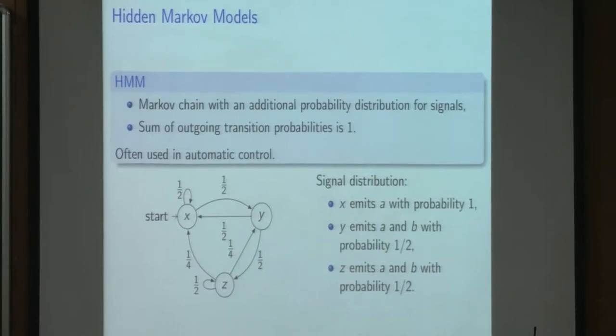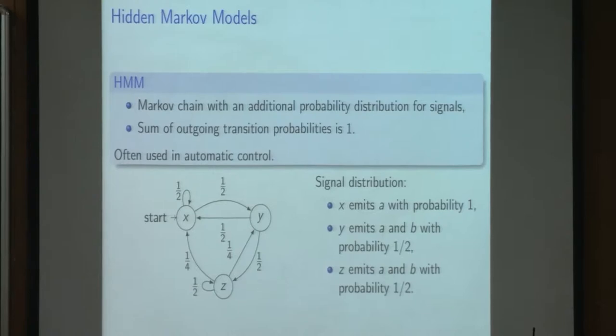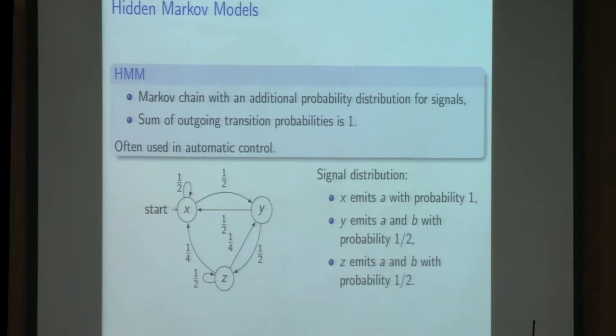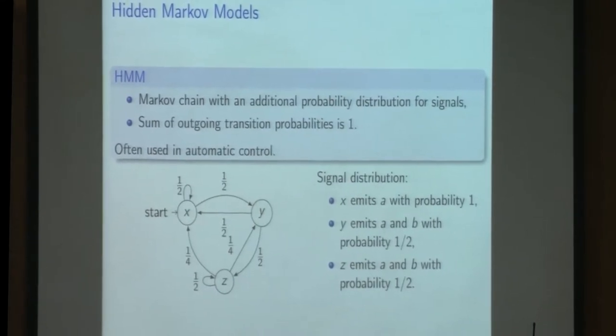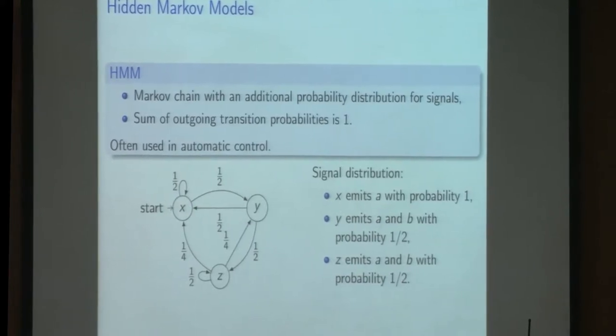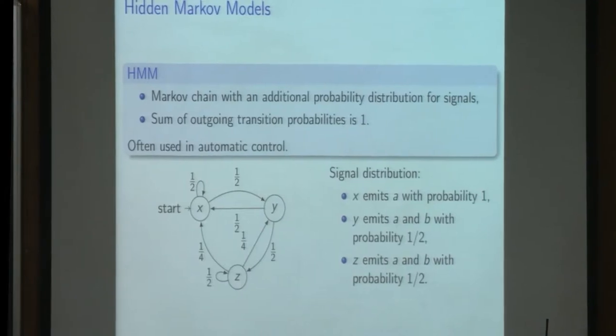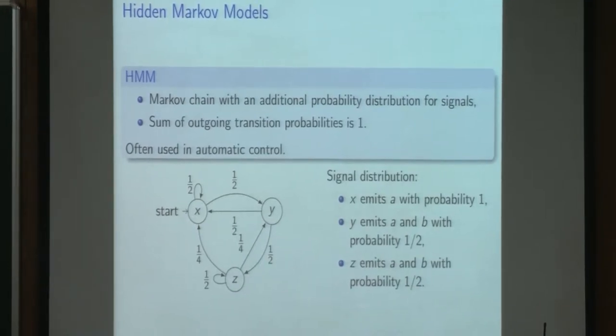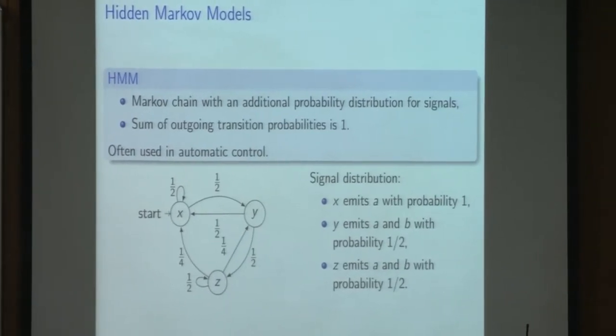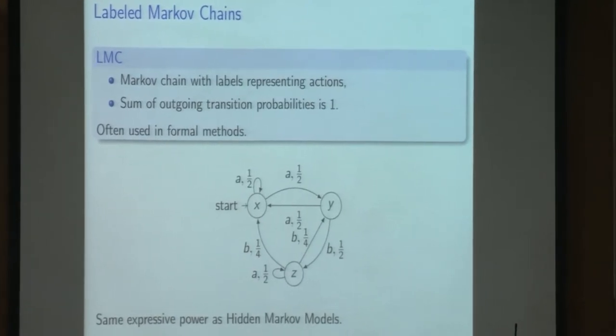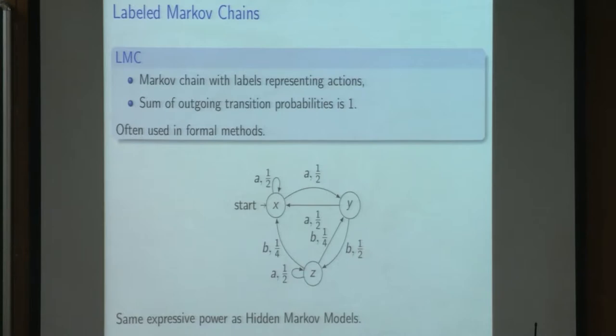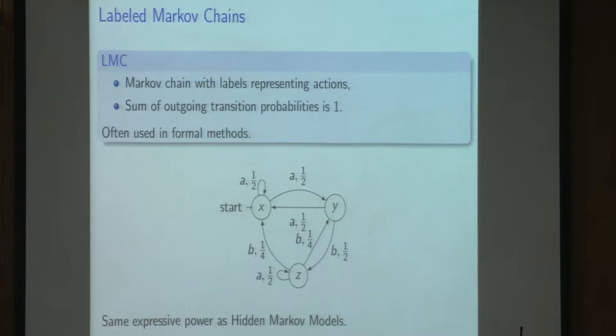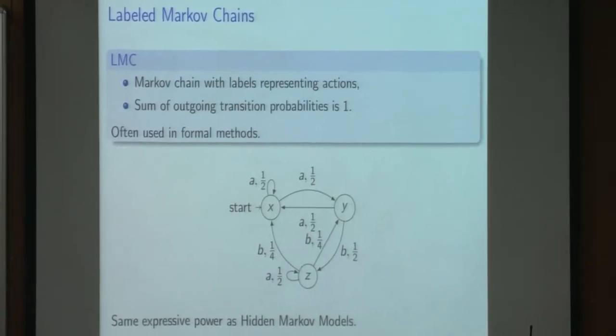So more formally, the classical model, one classical model that people have been looking at is hidden Markov models, where you can consider a Markov chain which is a bunch of states with probability over the transitions. In hidden Markov models, typically there is a signal being emitted at every state. And very often it is assumed that the signal is stochastic. So there is some probability associated with which the signal is emitted, and there is a probability associated with which the transitions are taken. And as always, from one state to go, the sum of the outgoing probabilities to go to another state adds up to one, classical, right?